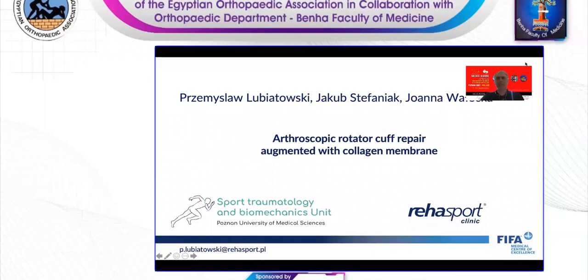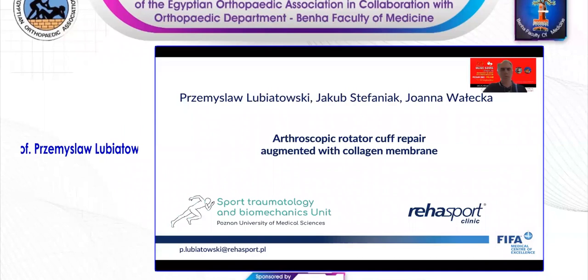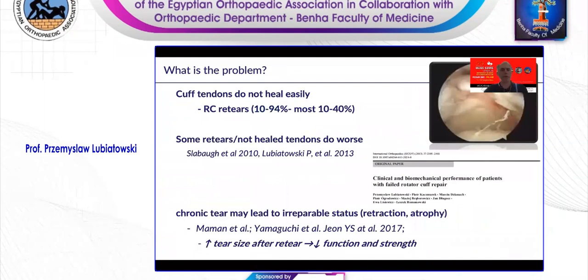Mr. Chairman, ladies and gentlemen, it's a great honor for me to be a participant of this great session. Thank you for your invitation and congratulations for the organization. I'll be speaking about arthroscopic rotator cuff repair augmented with collagen membrane. We know very well that cuff tendons do not heal easily, and re-tears may happen quite commonly — up to 40% in most reports. Some re-tears or non-healed tendons will do worse clinically and biomechanically. We also know that chronic tears may lead to irreparable status, often associated with decreased function and strength.